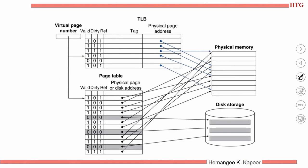If we integrate TLB with the page table: the virtual page number comes in and gets indexed. We check for valid or not. If valid, we get the PPN — the physical page number — and go read the data. If the valid bit is 0, the TLB does not have this entry — that is called a TLB miss — and you have to go to the page table to find the physical page number. The page could be in the RAM or on the disk.